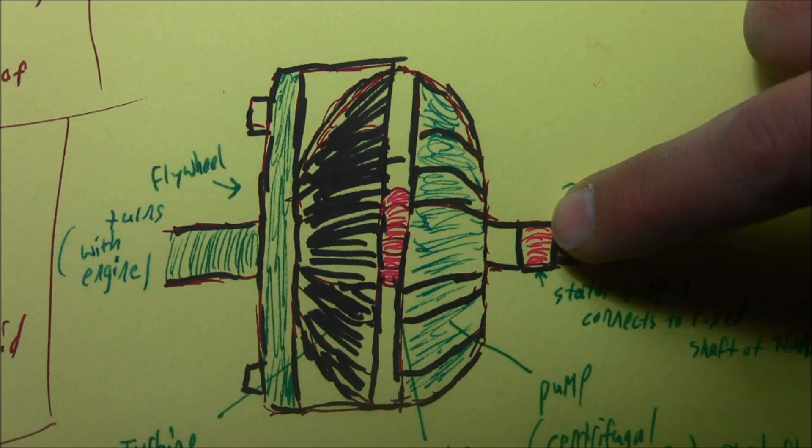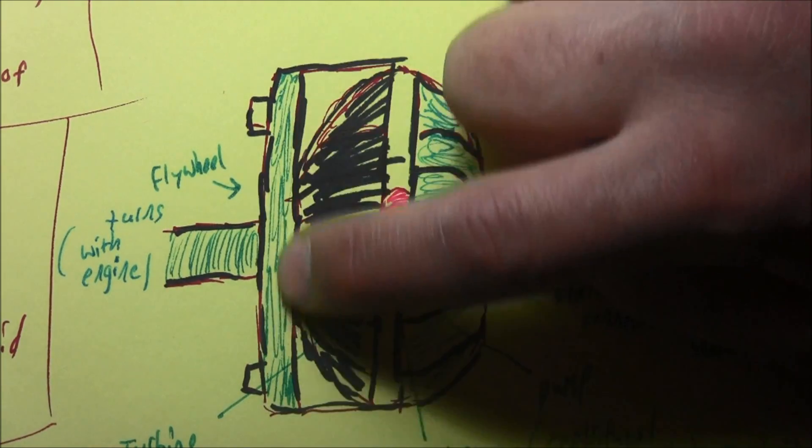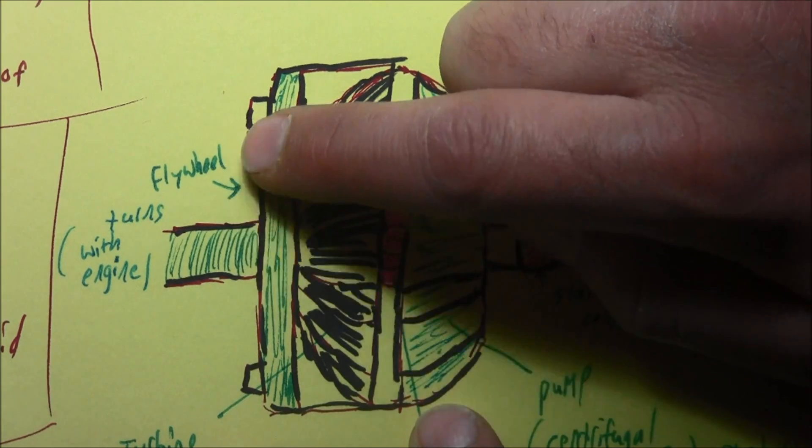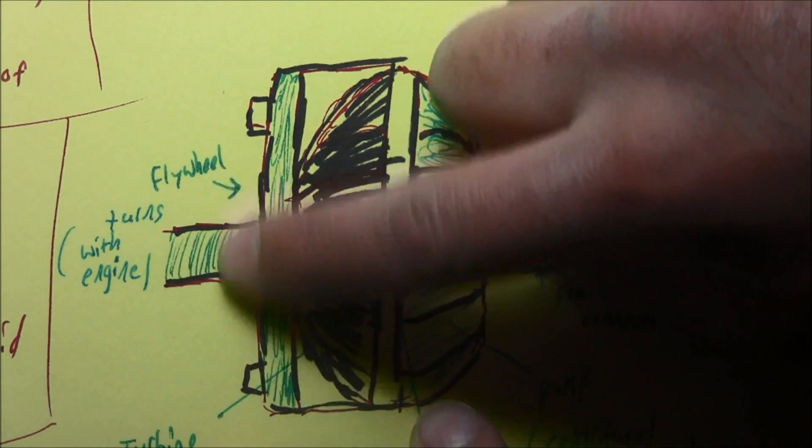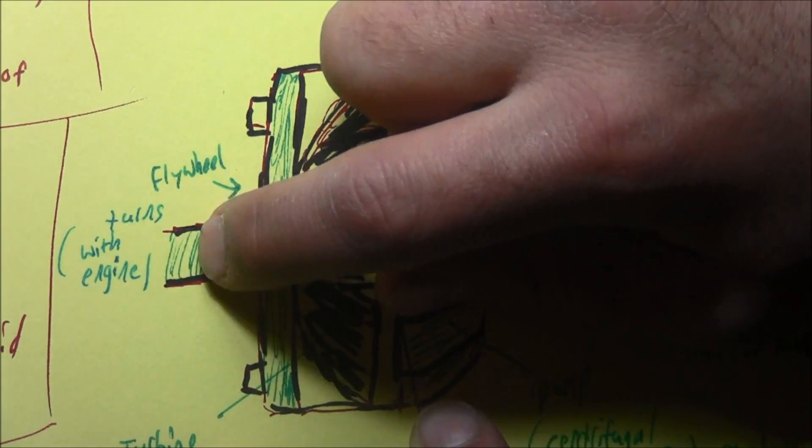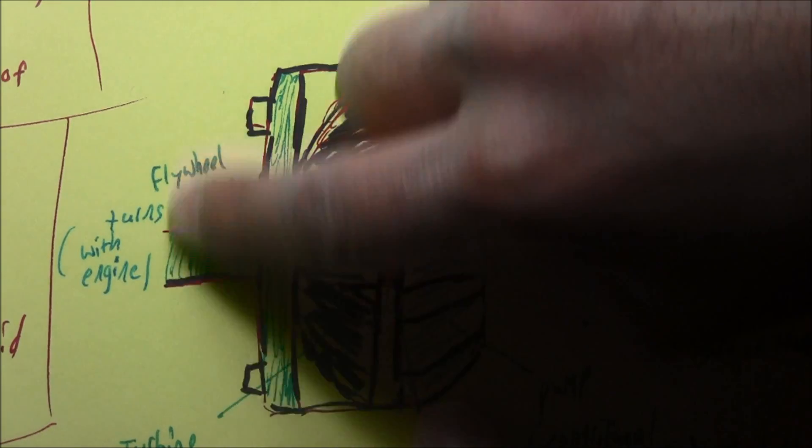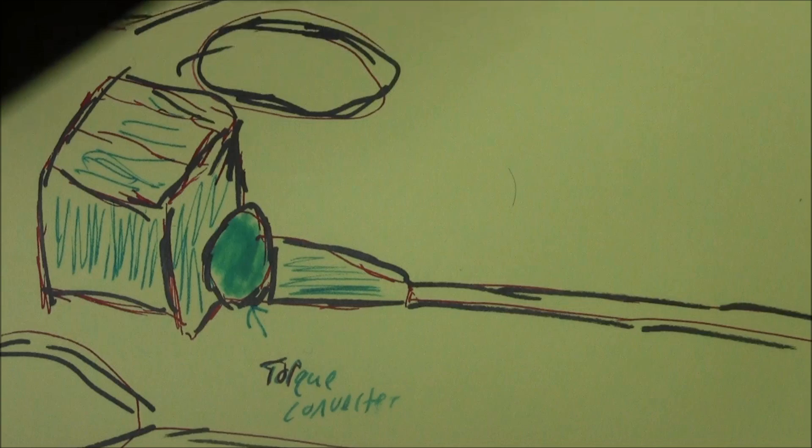Your flywheel right here is connected with the engine's crankshaft, so it turns when the engine's crankshaft turns. When the engine's making the crankshaft turn, it's making the flywheel turn together. So you have your engine, your torque converter, and then your transmission.